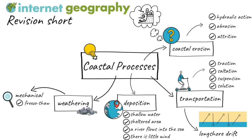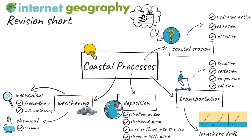Repeated freeze-thaw can cause the rock to break up. Another type of mechanical weathering is salt weathering, which occurs when salt spray from the sea gets into a crack in a rock. It may evaporate and crystallize, putting pressure on the surrounding rock and weakening the structure. Chemical weathering is the breakdown of rock through changing its chemical composition. Carbonation is a type of chemical weathering that occurs when slightly acidic water dissolves sedimentary rock, such as limestone.